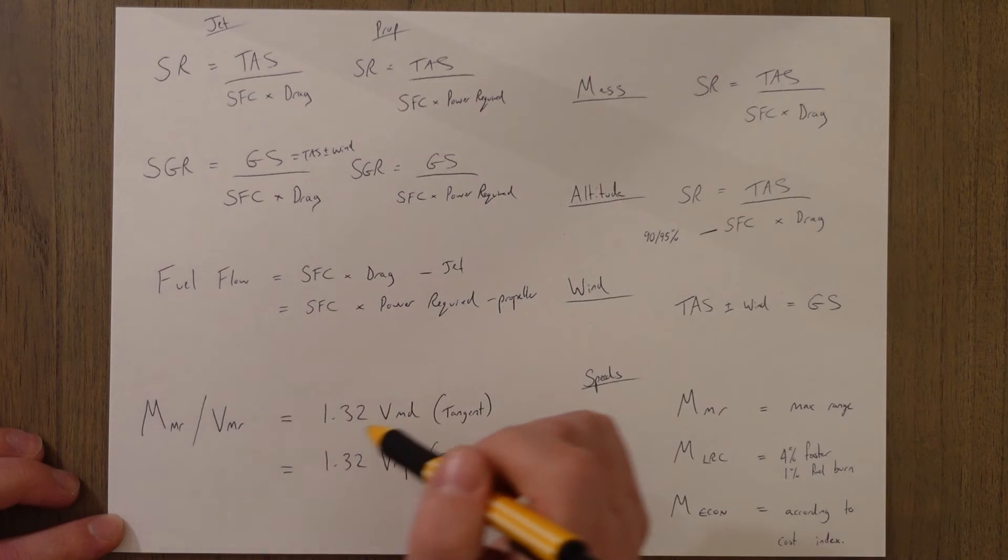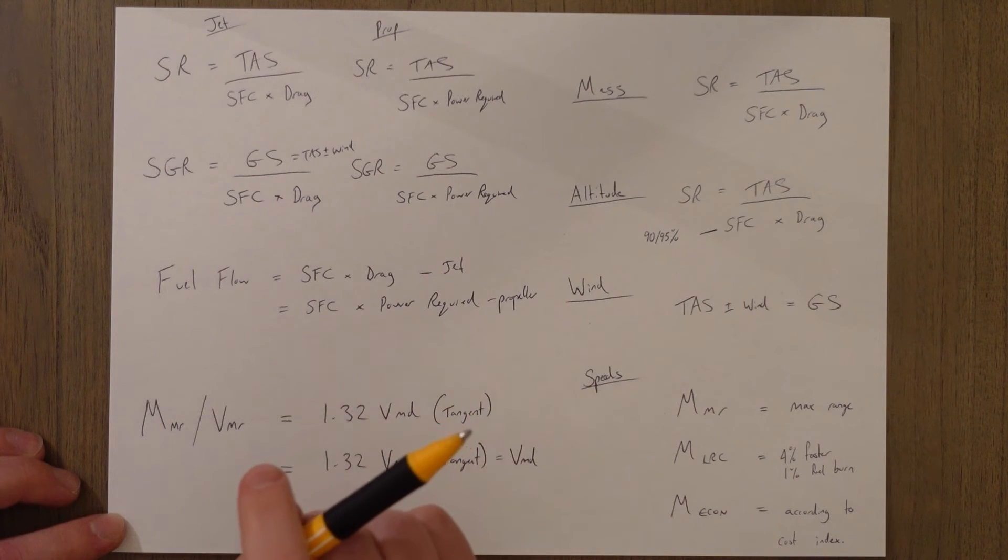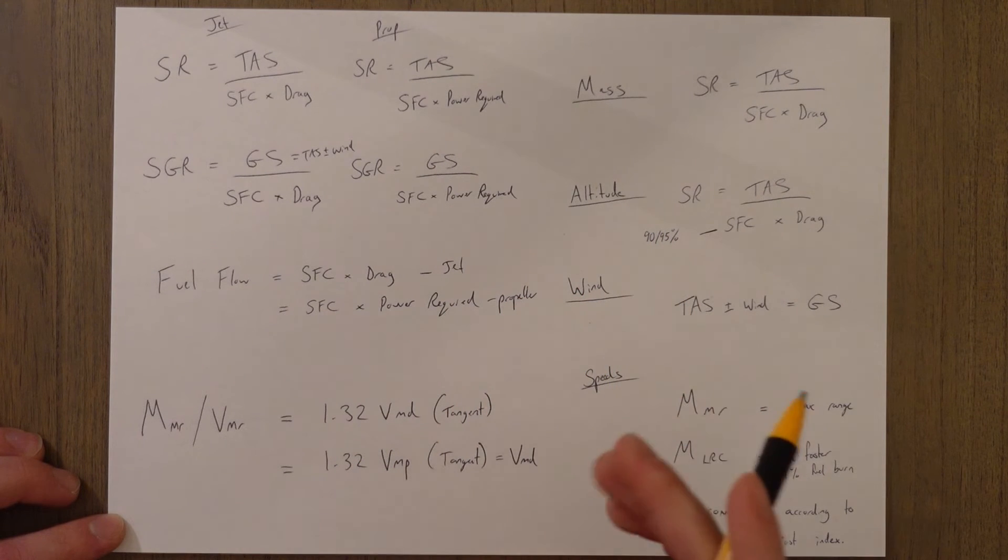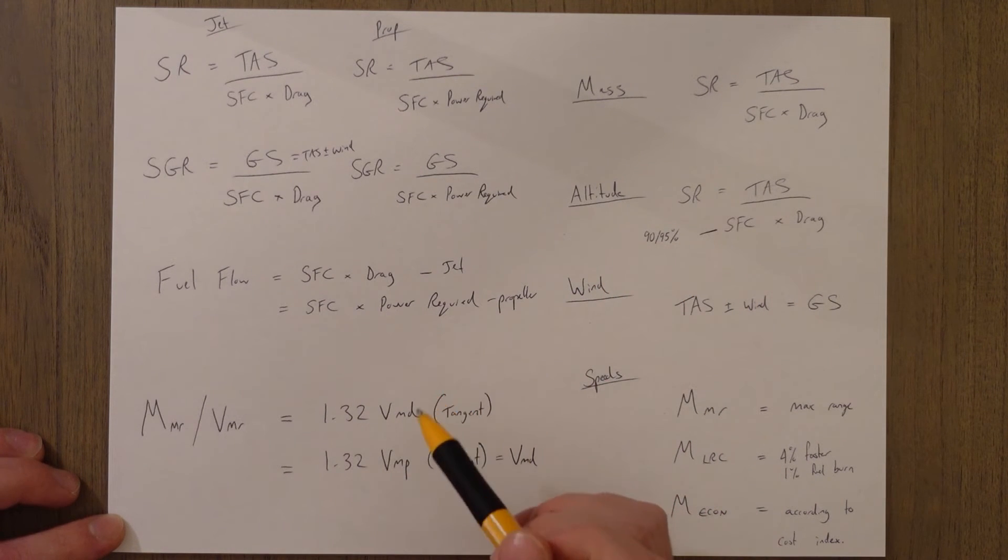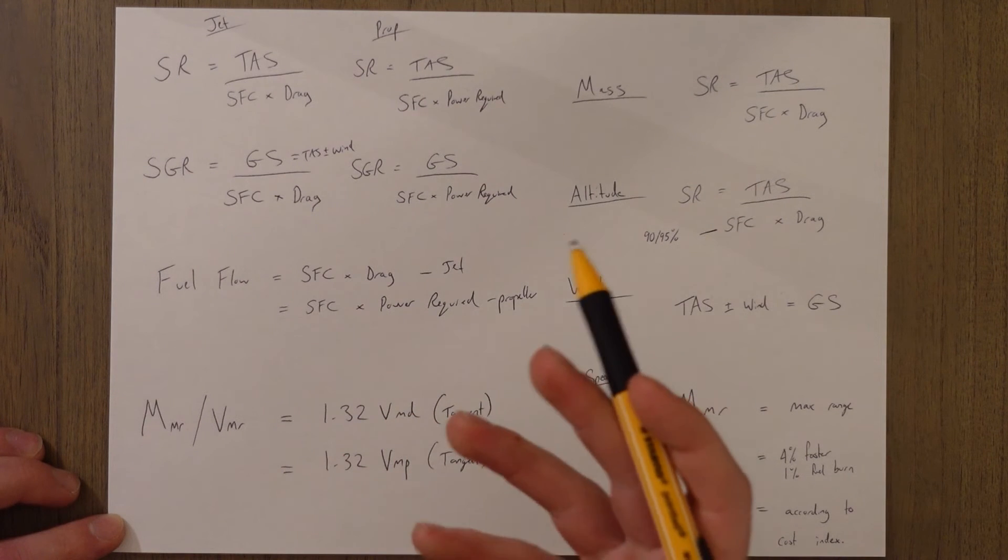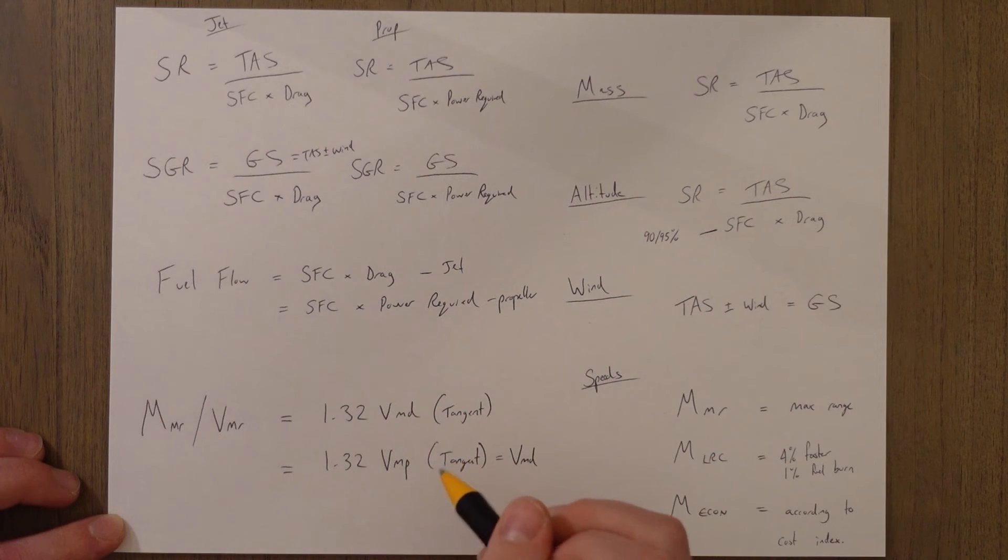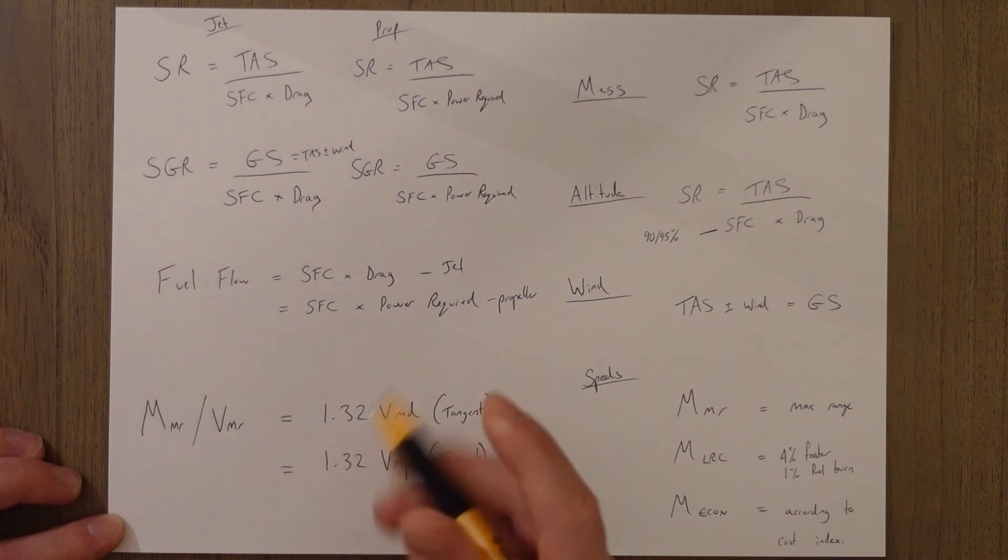The speeds for max range - speed MMR is going to be 1.32 times VMD. That's basically the tangent to the drag curve where our thrust to drag ratio is maximized. In a propeller, it's slightly different - it's the tangent to the power required graph, and the tangent means that our ratio of thrust to power required is maximized, and that occurs at 1.32 VMP, which just because the maths happens to be VMD - sorry, yeah - because VMP is 0.76 times VMD, and 0.76 times 1.32 is basically 1.